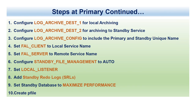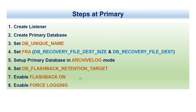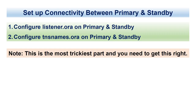Once everything is set up on the primary, the next step is connectivity. We need to set up listener.ora on primary and standby, and tnsnames.ora on primary and standby. This is the most critical and trickiest part — you may spend a lot of time getting this right, but once the connectivity between primary and standby works, the rest of the database setup is relatively simple. I'll show you how I've done this, and the script will be shared so you can refer to it.